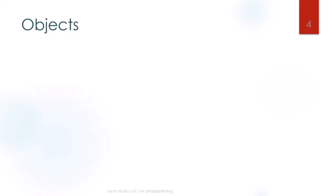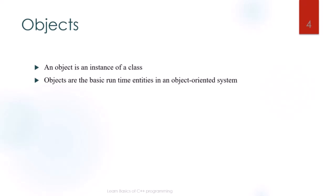Objects. Once the class is declared, we need to create a variable of that type. An object is an instance of a class. Objects are the basic runtime entities in an object-oriented system, which have state and behavior. All the members of the class are accessed through objects. The syntax is: class, class name, and variable name.